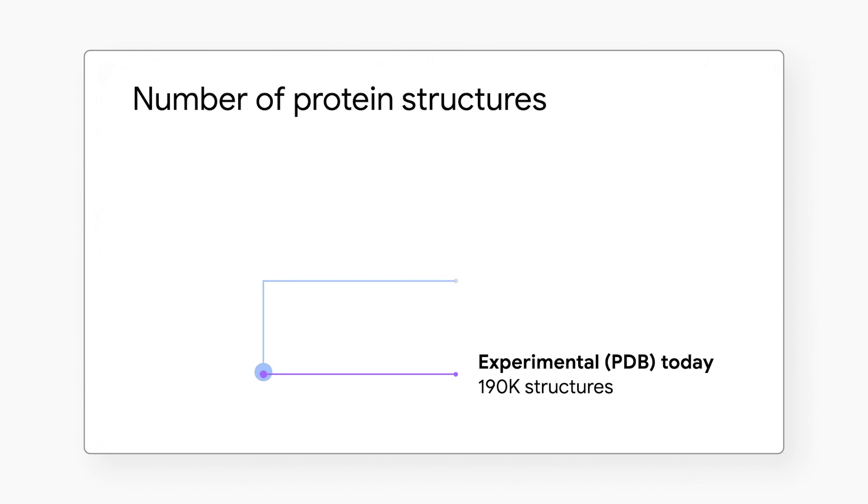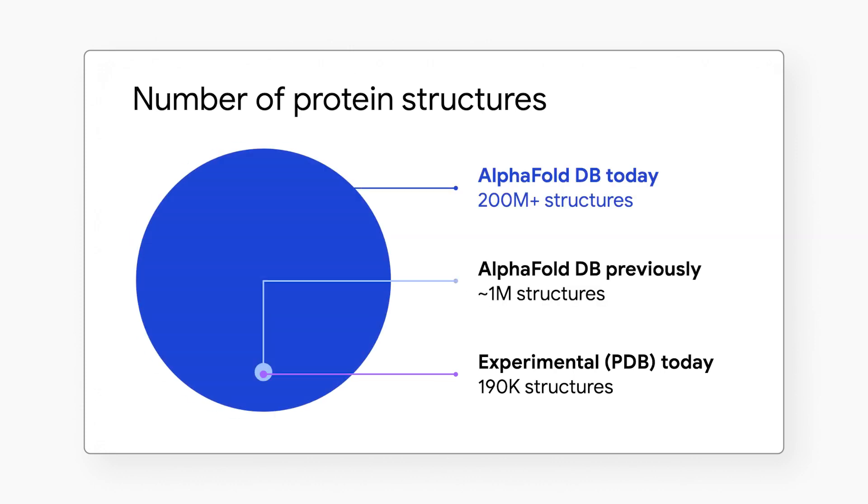Now, DeepMind has expanded the set of available predictions by more than 200x from nearly 1 million to nearly 214 million to cover almost all catalogued proteins found in nature.